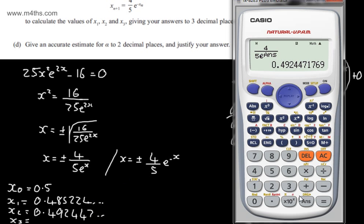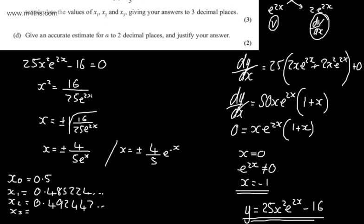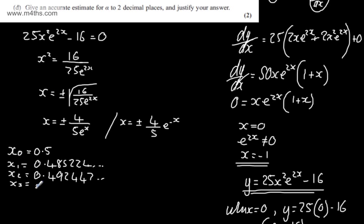And then finally we've got x3: 4, double 8, 9, 0, 3. So let's write that in: 4, double 8, 9, 0, 3. So we can say 0.485, we've got 0.492, and we've got 0.489, all to 3 decimal places as required.